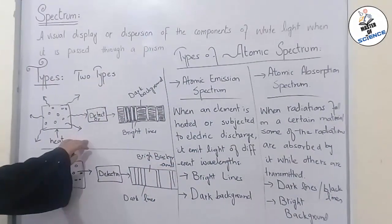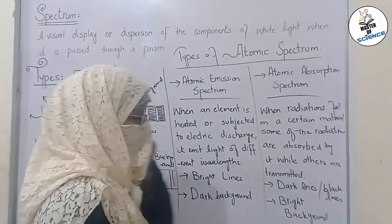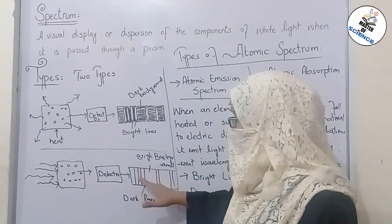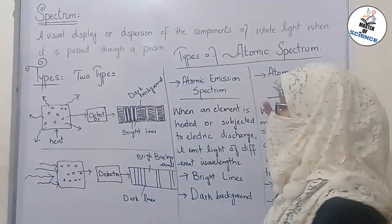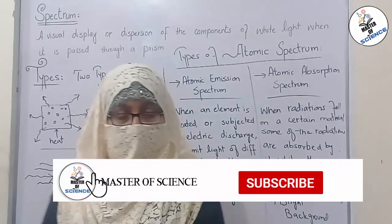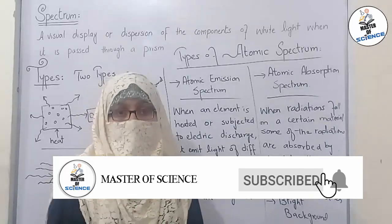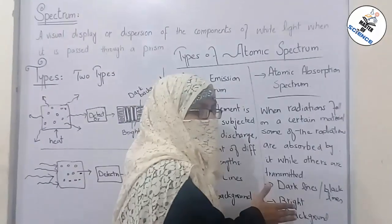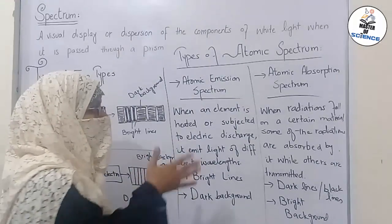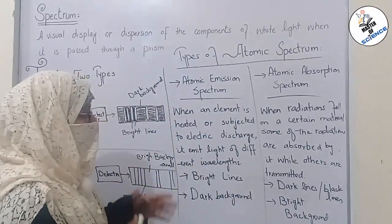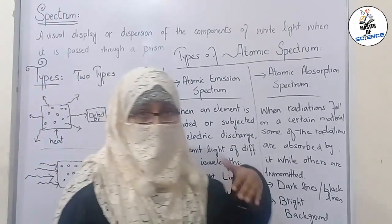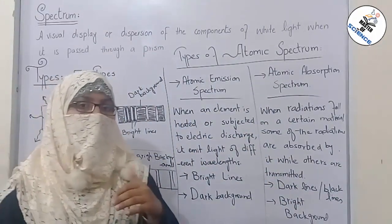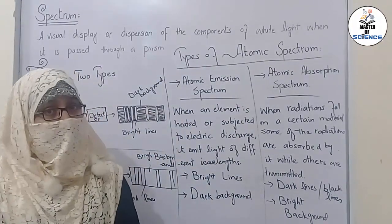This is atomic emission spectrum and this is atomic absorption spectrum. The conclusion is that the lines appearing in both spectra have the same wavelengths and positions, but they appear as bright lines in atomic emission spectrum and dark lines in atomic absorption spectrum — because in emission, light is emitted, while in absorption, light is absorbed. Thank you so much, this is all.